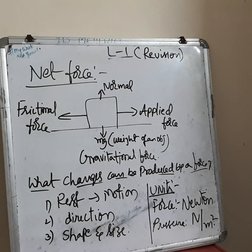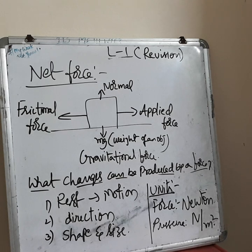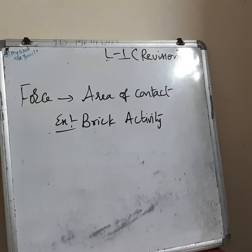The unit of force is Newton. The unit of pressure in SI units — pressure equals force divided by area, and since force is in Newtons and area in SI units is meters squared, pressure is measured in Newton per meter squared.